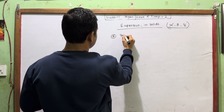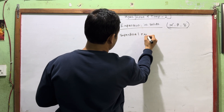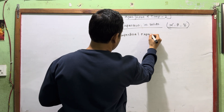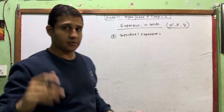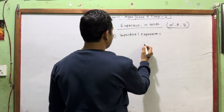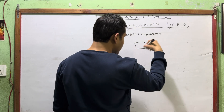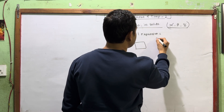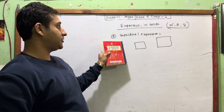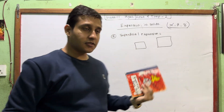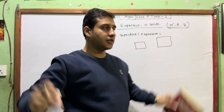Superficial expansion. What do we mean by superficial expansion? It is area-wise expansion. Linear expansion is length-wise. Now superficial means area-wise. Linear expansion deals with length, while superficial expansion deals with area.